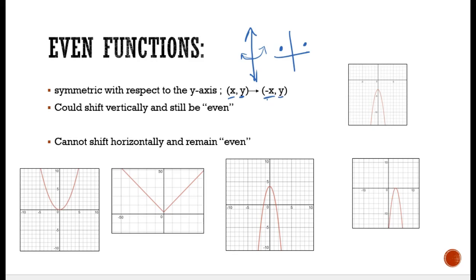Even functions can shift vertically and still be even. Look at this example right here — this is even. If I take this function and move it up, it's still even. If I fold along the y-axis, it's still symmetric; the two sides are equal, like a butterfly. Same thing here — this is symmetric to the y-axis. It's an absolute value graph; both sides look the same, so it is an even function.